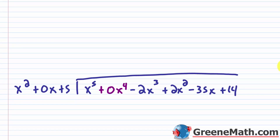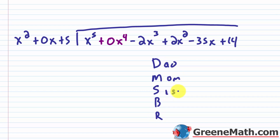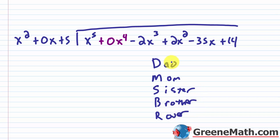Now you need to understand the steps involved with the division. The steps are D, M, S, B, R. A lot of people remember this as dad, mom, sister, brother, rover — the family dog. Repeat that a few times and you'll commit it to memory. That stands for divide, multiply, subtract, bring down, repeat or remainder.